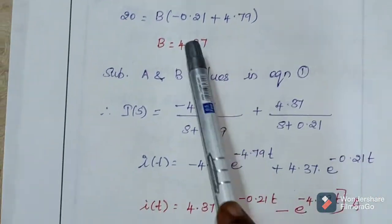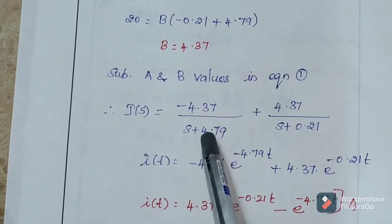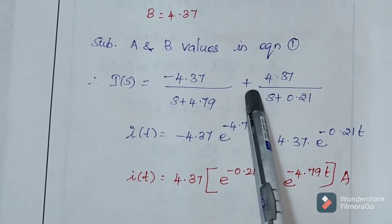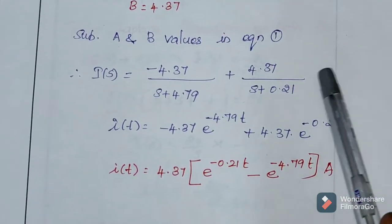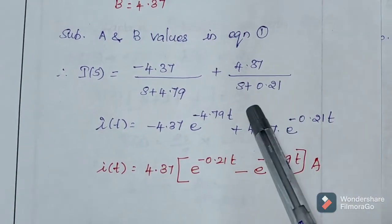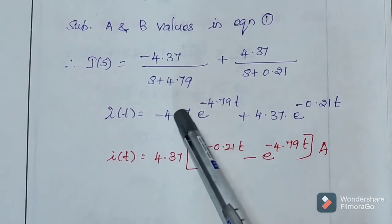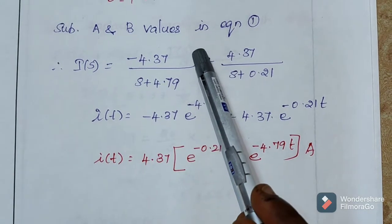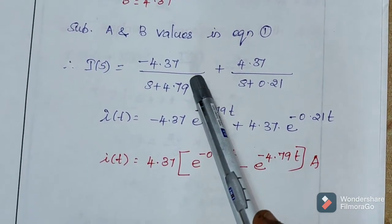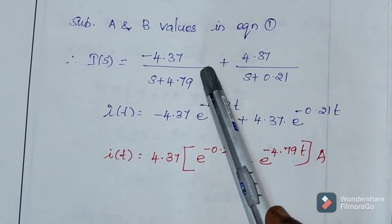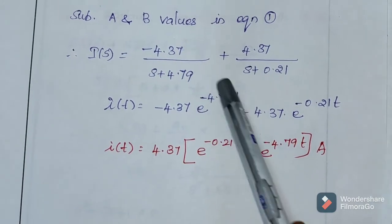So, I(s) is equal to A value minus 4.37 divided by s plus 4.79 and B value 4.37 divided by s plus 0.21. Now, take inverse Laplace transform. This is a constant term. We know the inverse Laplace transform of 1 by s plus A is e power minus A T.